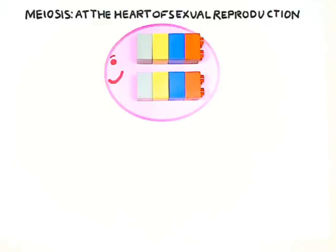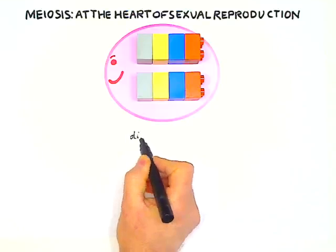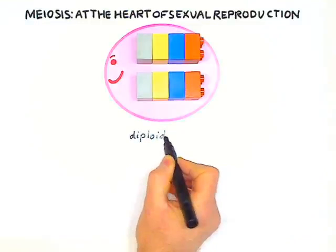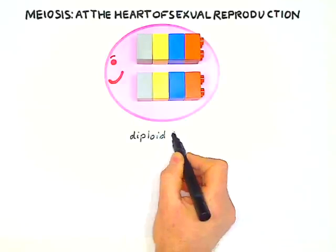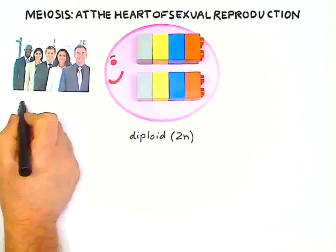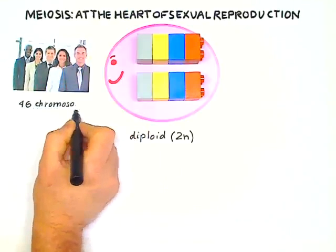In either scenario, the genetic information is duplicated, and the cell is said to be diploid, and the number of chromosomes it contains is 2n. Humans are diploids, and 2n is 46 chromosomes.